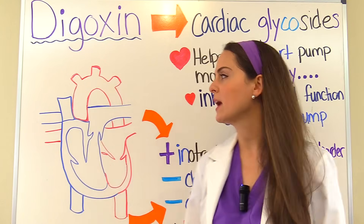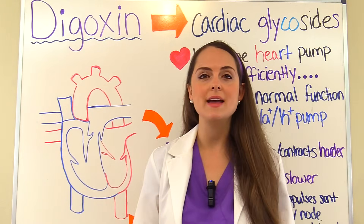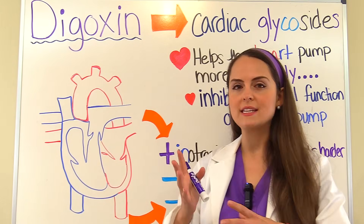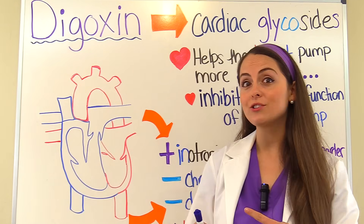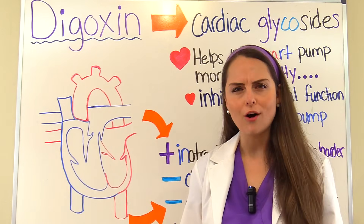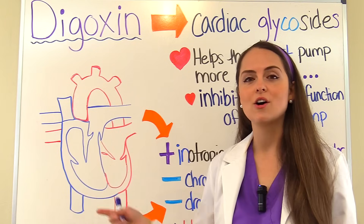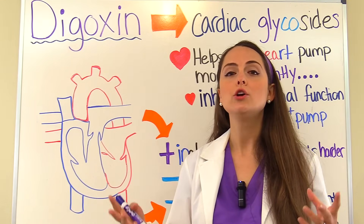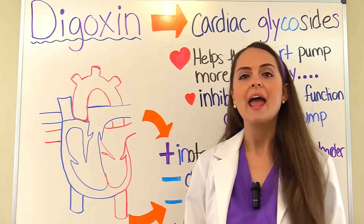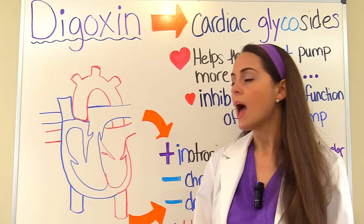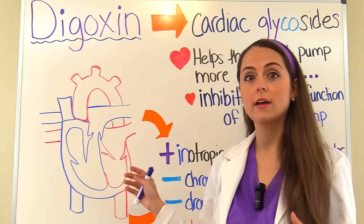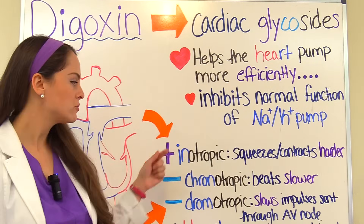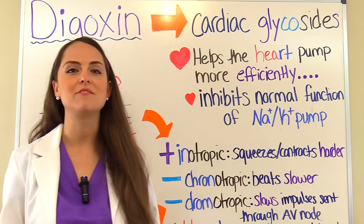This pump is found on the cell membrane of cells that make up our muscle fibers, and muscle fibers play a huge role in how strongly your heart is able to contract. So if we alter that pump, we're going to alter the contractility of this heart muscle. Digoxin also alters how fast or slow your heart beats — altering the rate and how fast impulses are sent through the electrical conduction system of the heart. These are the inotropic, chronotropic, and dromotropic actions of the heart.